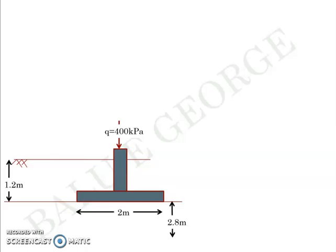Then we moved to Terzaghi's bearing capacity equation. We discussed the assumptions used to formulate it — it's for a strip footing — and for a strip footing, the ultimate bearing capacity is: qu = cNc + γDf·Nq + ½γBNγ. The first term is related to cohesive strength, the second to surcharge load above the foundation level, and the third to the soil beneath the foundation level.